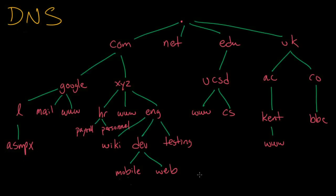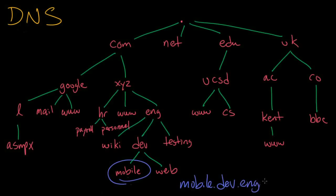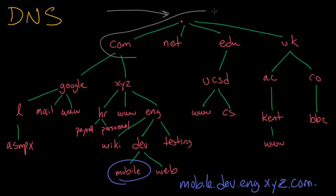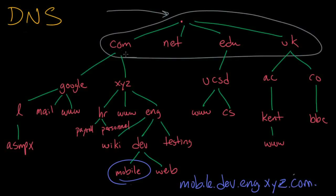Let me give you an overview of how DNS queries work. Let's say someone's trying to reach mobile.dev.engineering.xyz.com. The query is going to come in at the top and hit the root zone first. The root name server, which only knows about itself and the top level domains like com, net, and edu, is going to look at the query and see that it knows about com. So the query gets passed down to the com zone.